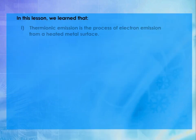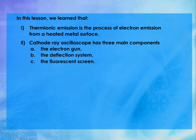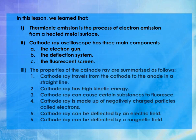In this lesson, we learned that: 1. Thermionic emission is the process of electron emission from a heated metal surface. 2. The cathode ray oscilloscope has three main components: a. the electron gun, b. the deflection system, and c. the fluorescent screen. 3. The properties of the cathode ray are: 1. Cathode ray travels from cathode to anode in a straight line. 2. Cathode ray has high kinetic energy. 3. Cathode ray can cause certain substances to fluoresce. 4. Cathode ray is made up of negatively charged particles called electrons. 5. Cathode ray can be deflected by an electric field. 6. Cathode ray can be deflected by a magnetic field.